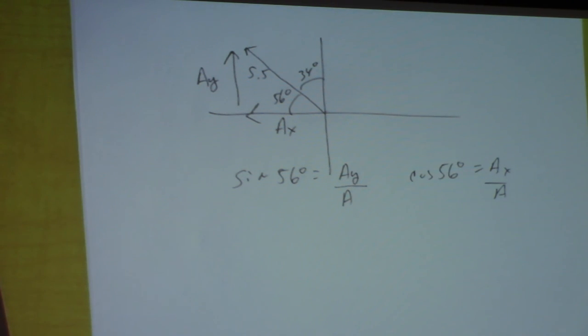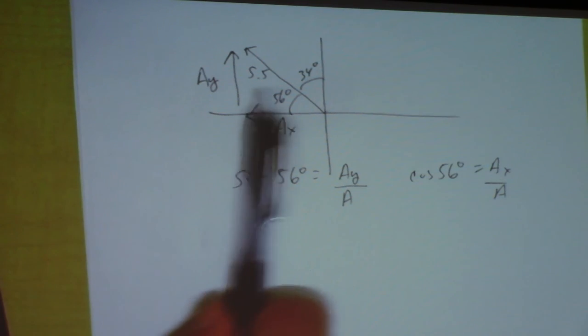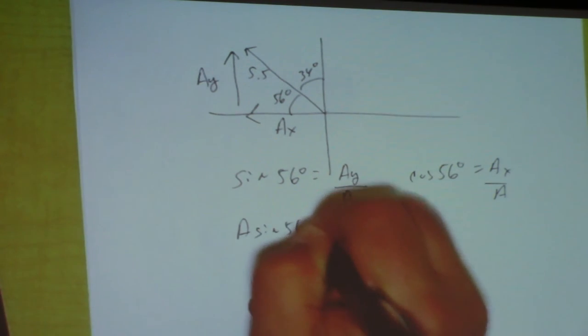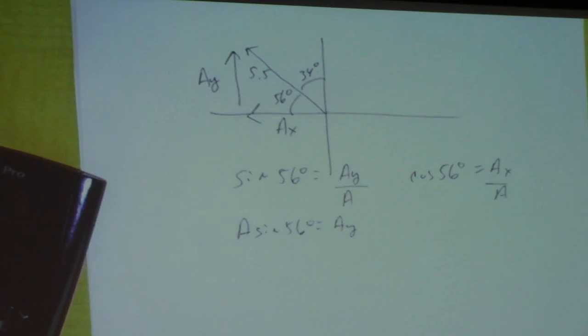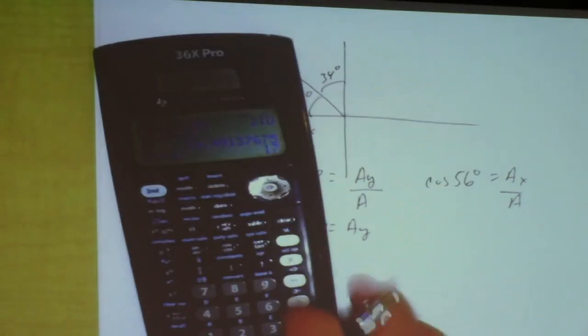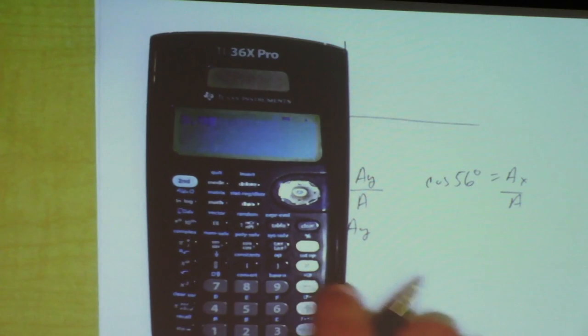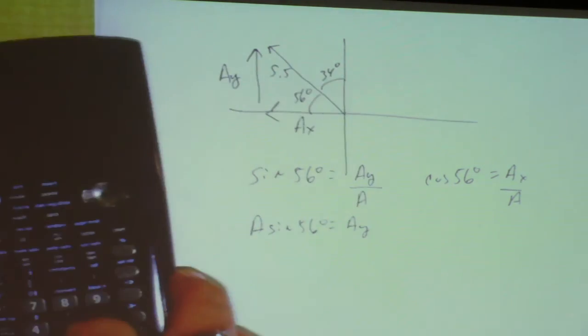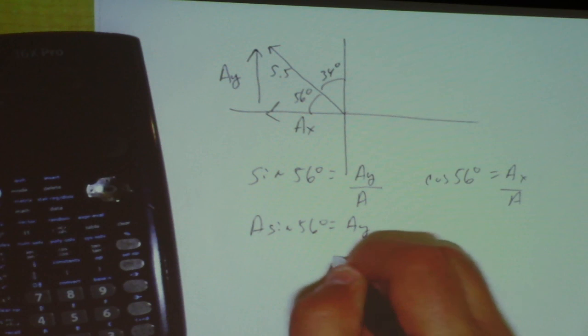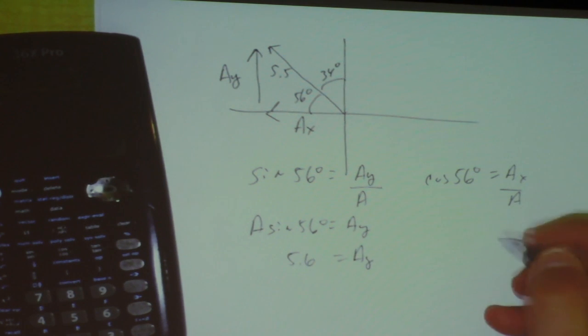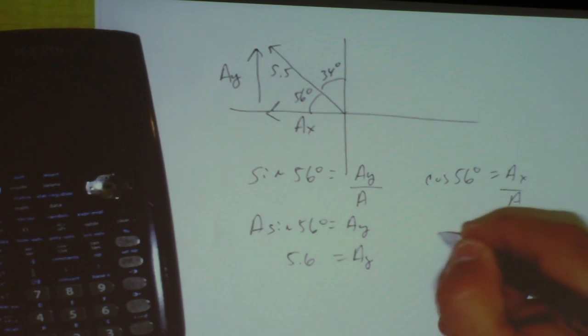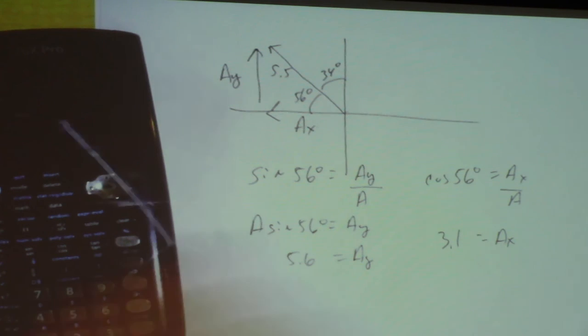So the sine of 56 is Ay over A, cosine of 56, that's the adjacent side, Ax over A. Now this is just going to give me the magnitude of Ax. From the picture I know it's going to be negative. So I'm just using these small triangles. So we've got 5.5 times the sine of 56, 4.6. And then you do the same thing over here. Ax, 5.5 times the cosine of 56, it's 3.1. And then from the picture you know it's got to be negative 3.1 really.